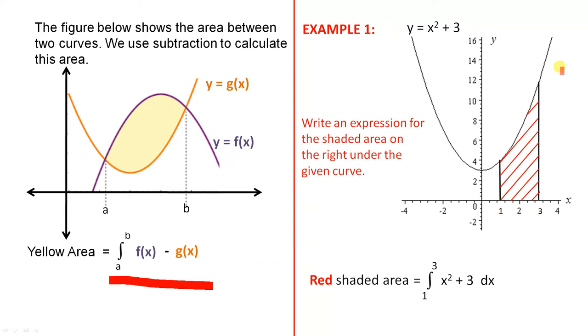Example one: Write an expression for the shaded area on the right under the given curve. We're looking for this shaded area. The equation of this parabola is y equals x² plus 3. The shaded area is bounded by the graph, the x-axis, and those two lines. So the red shaded area is the integral from 1 to 3 of x² plus 3 dx.